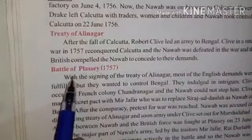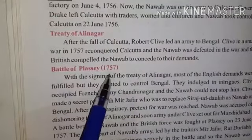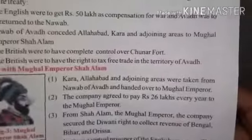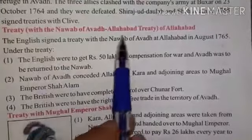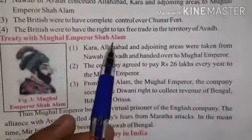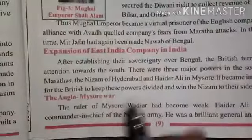Then we covered British conquest of Bengal, the Battle of Plassey, and the Battle of Buxar in 1764. As a result, a treaty was signed with the Nawab of Awadh and the Mughal Emperor Shah Alam.